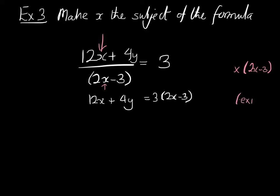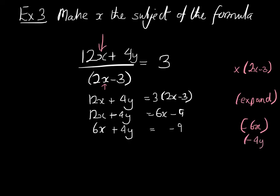Now we're going to expand these brackets. So we're going to get that 12x plus 4y is equal to 6x subtract 9. And now we're going to subtract 6x off both sides of the equation to get x's only on one side. So we have 6x plus 4y is equal to negative 9. And then we're going to subtract 4y off both sides of the equation. So we have 6x is going to be negative 4y subtract 9. And then finally, we're going to divide by 6.